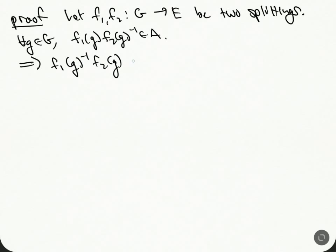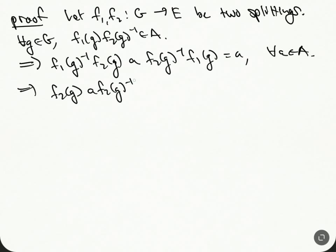This implies that F₁(g)⁻¹·F₂(g), so if we conjugate an element a by an element of A, since it's abelian, this is just going to be equal to a. And now we just write this out again. So this tells us that F₂(g)·a·F₂(g)⁻¹ is equal to F₁(g)·a·F₁(g)⁻¹.